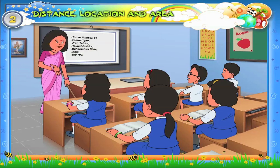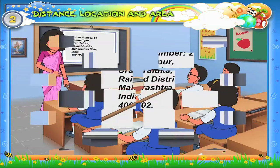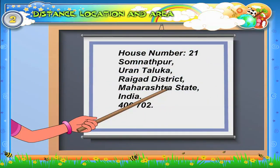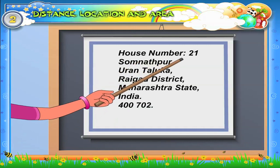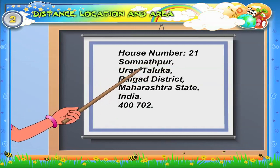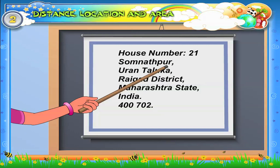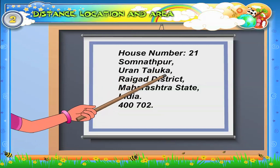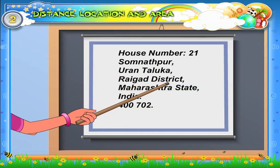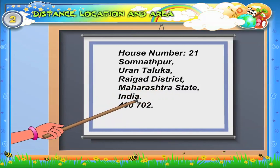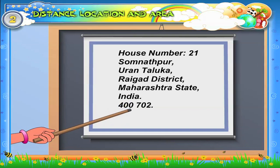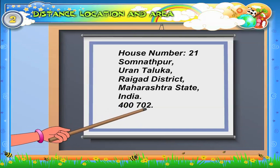When we say our address, we say the location of our house. We can also mention the location of our town. For example, a village address can be written simply as: House number 21, Somnathpur — 770 202.